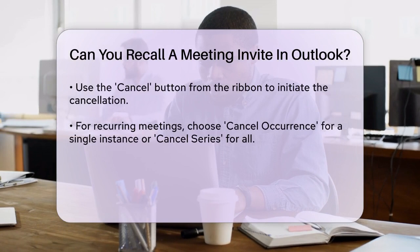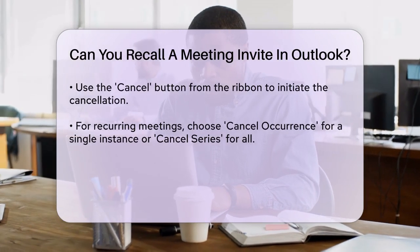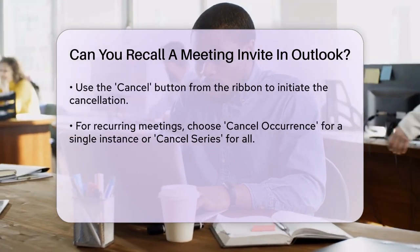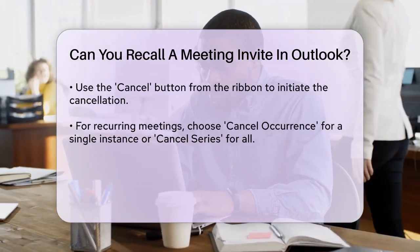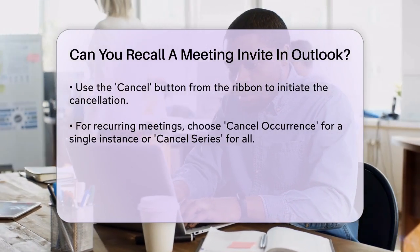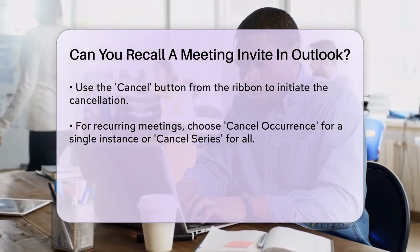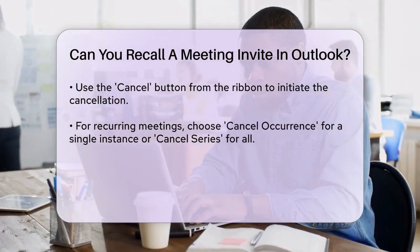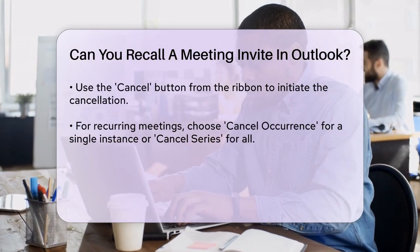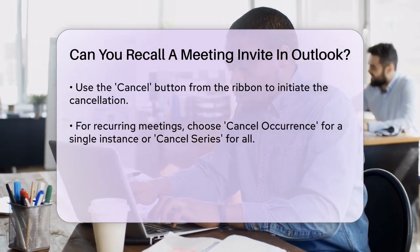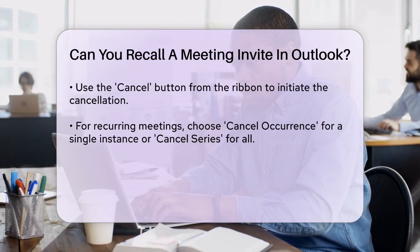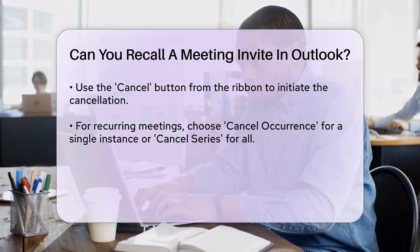When you cancel the meeting, Outlook will automatically send a cancellation notice to all attendees, and the meeting will be removed from their calendars. It's a good idea to include a message explaining why the meeting is being canceled or rescheduled. This helps keep everyone informed and avoids confusion.